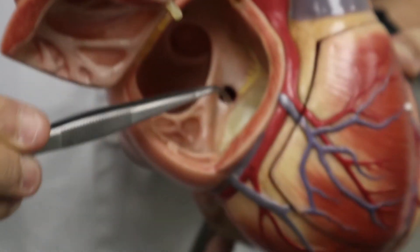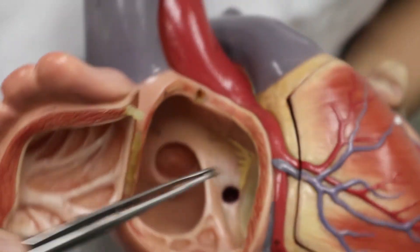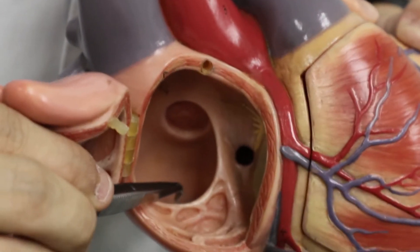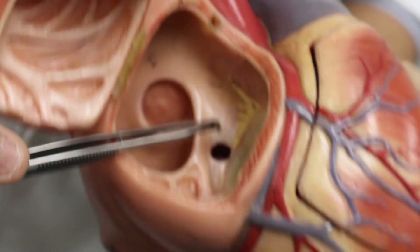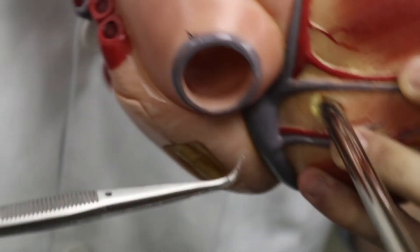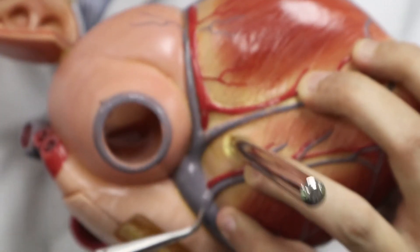In between the tricuspid valve orifice and the inferior vena caval orifice lies the opening of the coronary sinus. The coronary sinus is over here. Thank you.